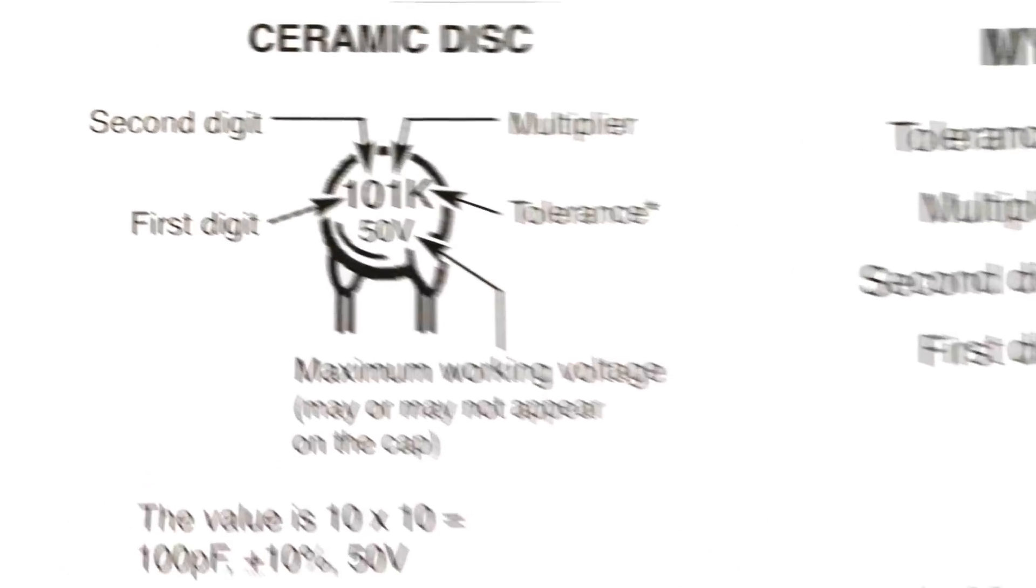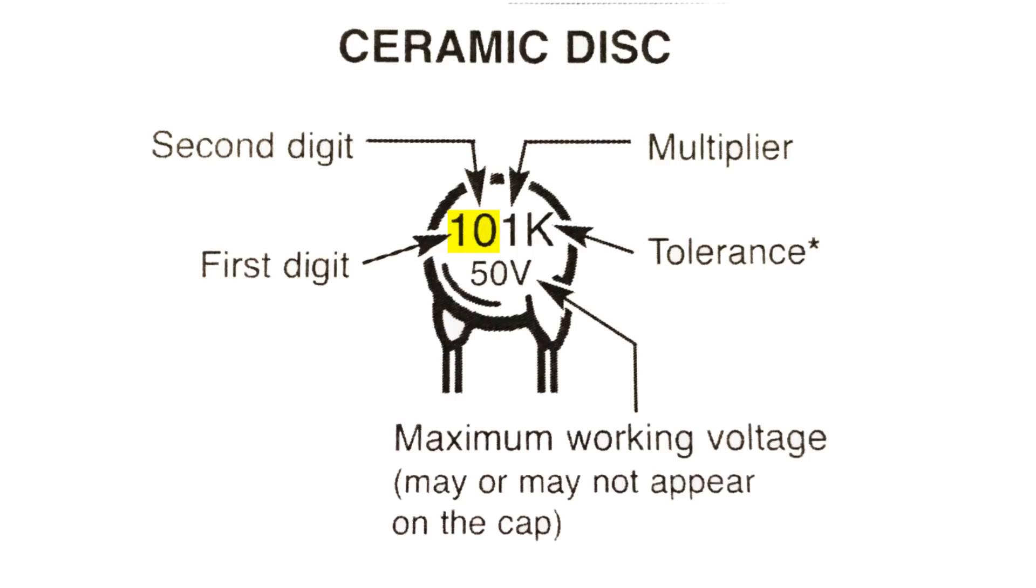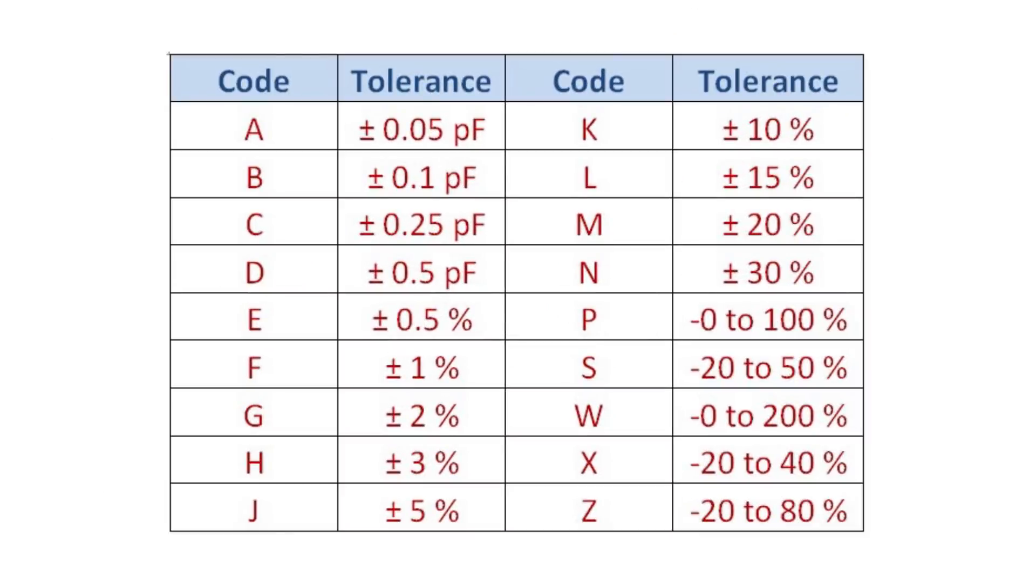Markings on capacitors can vary depending on the manufacturer and what type of capacitor it is. You usually want to look for a series of three numbers to figure out the value. The first two numbers are the first two digits of the value and the third is a multiplier. A letter at the end shows the tolerance. If you see 101K, the K doesn't mean thousand. It means a tolerance of plus or minus 10%. Here's a chart that shows what other letters mean different tolerances. Let's find the capacitor for R1 which according to the instructions is 100 picofarads. So we're looking for one with the markings of 101.